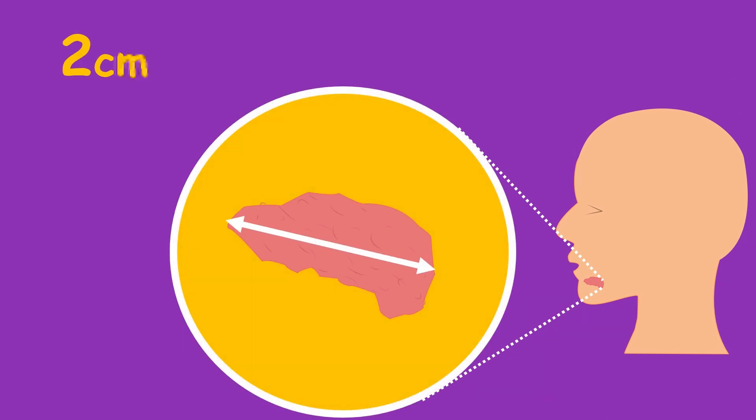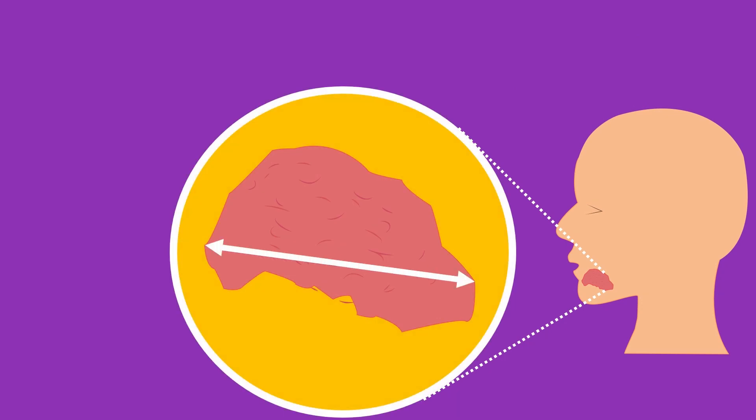For T1, the size of tumor is two centimeters or less in its greatest dimension. In T2, the size of tumor is more than two centimeters but less than four centimeters when measured in its greatest dimension.